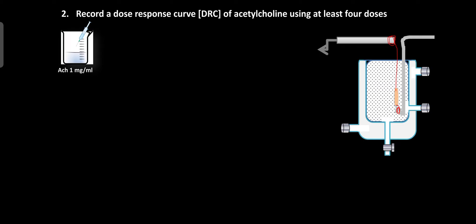After that, record the baseline without any drug. Then administer 0.1 ml of acetylcholine solution from the stock solution and record the responses for 90 seconds. After 90 seconds, stop the drum and change the Ringer's solution. Due to changing of Ringer's solution, the drug is completely removed and the tissue relaxes, returning the lever to its original position. During this period, change the frog Ringer's solution at least 2 to 3 times. After the washing period, once again record the baseline without any drug for 30 seconds.